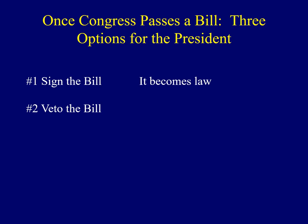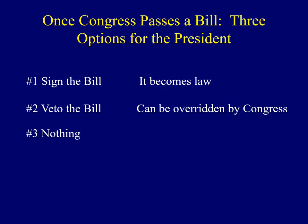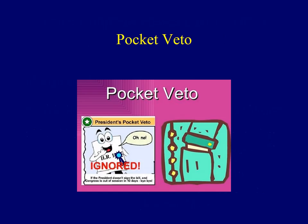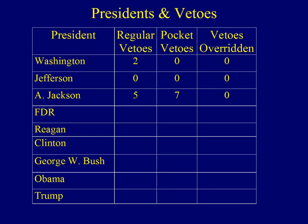Once Congress passes a bill, there are three things the president can do. First, sign the bill and it becomes law. If the president's opposed, he could veto the bill, but that veto could be overridden by Congress. If the president does nothing and 10 working days pass, that bill becomes law even without the president's signature. But if Congress adjourns within those 10 working days, it becomes a pocket veto. If the president issues a pocket veto, it cannot be overridden by Congress — it's one way the president can really shape lawmaking.